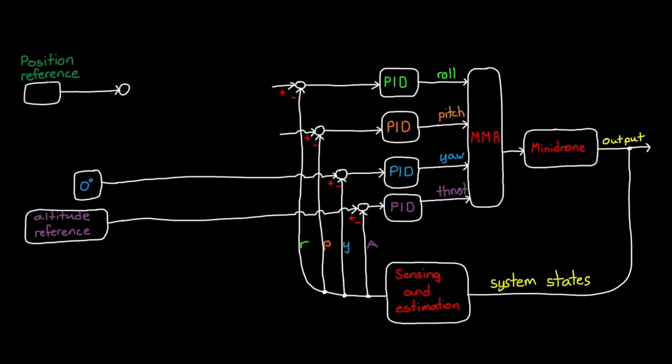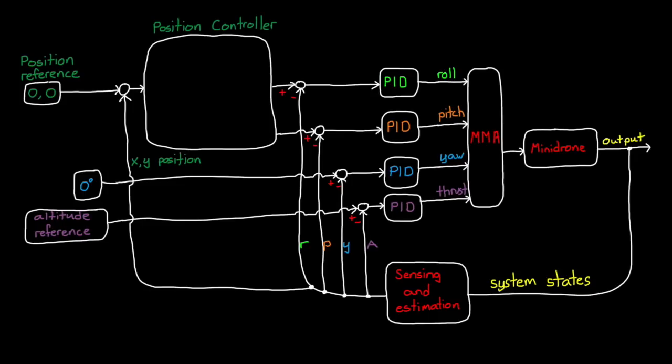We can feed back the mini drone's measured X, Y position and compare it to the reference to get the position error. For now, we'll say that the reference position is 0, 0. This way our controller will cause the drone to hover right above the takeoff point. Now our position controller takes the position error as an input and then outputs roll and pitch angles. These are the reference angles that our roll and pitch controllers are trying to follow.